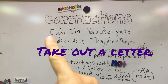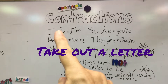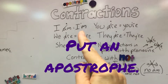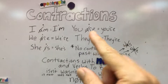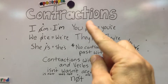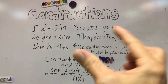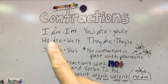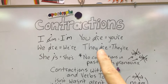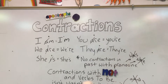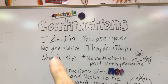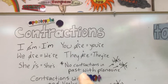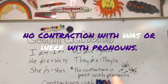You're going to say I am — you take away the A, put an apostrophe where the A was, and you have I'm. Here you have you are — take out the A, put an apostrophe where the A was, put it together, and say you're. We are — take out the A, put an apostrophe — we're. They are — take out the A — they're. She is — take out the I — she's. So there are no contractions with past when we're using pronouns and verb to be together.